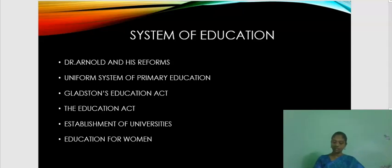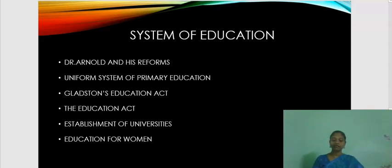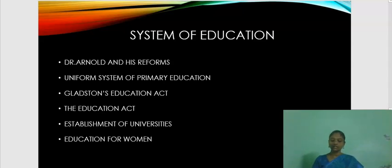After passing the Reform Bill in 1867, there was a change in providing a uniform system of primary education in England. Gladstone's Education Act of 1870 made provision for the establishment of a school board in every district. It was established to provide education for children between the ages of 5 and 12. This education was cheap but not free. The Education Act of 1870 was followed by many acts which brought about revolutionary changes in university education as well.